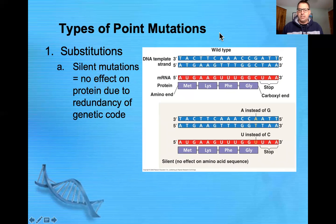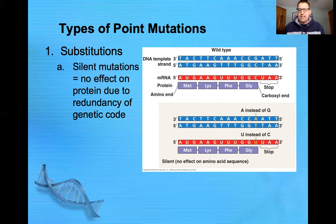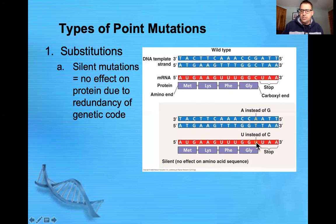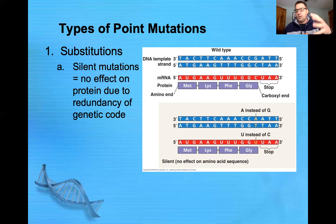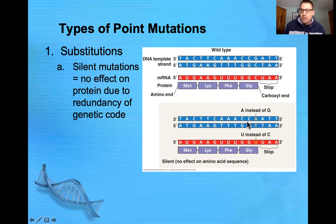There are different types of point mutations. A substitution is one type of point mutation. The result of a substitution could be a silent mutation that has no effect on the protein due to the redundancy of the genetic code. If we have an A put in place instead of a G, and a U instead of a C, the amino acid doesn't change because of the wobble — different codons can code for the same amino acid. For example, both GGC and GGU code for glycine, so there's no change to the protein structure or function. That is a silent mutation.